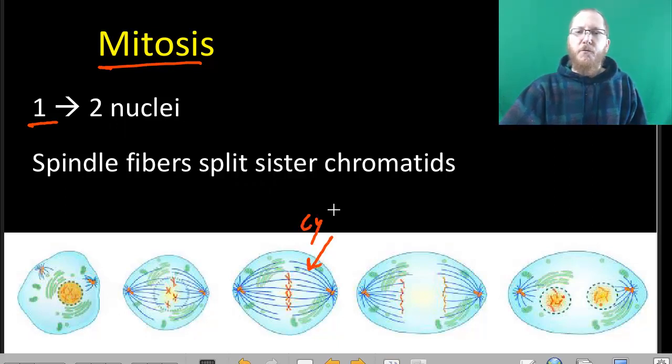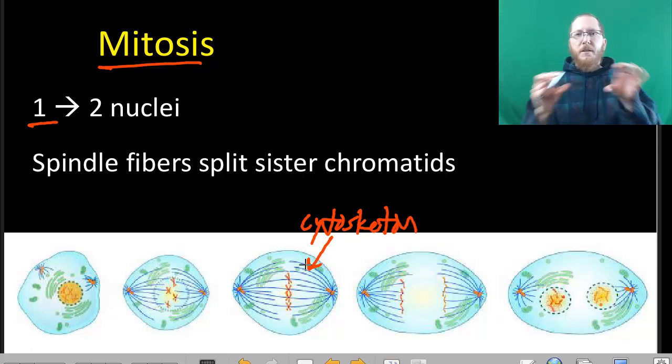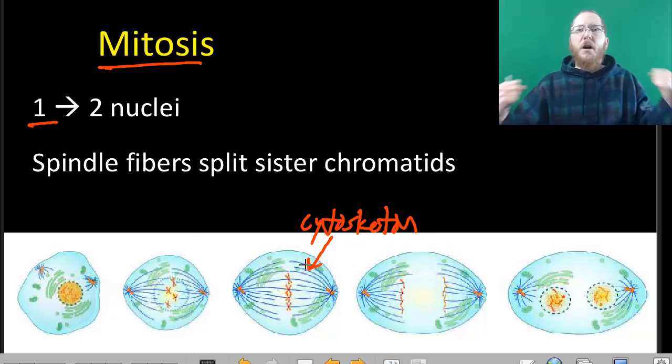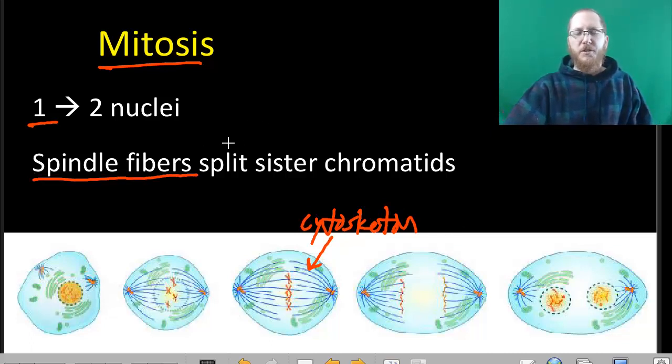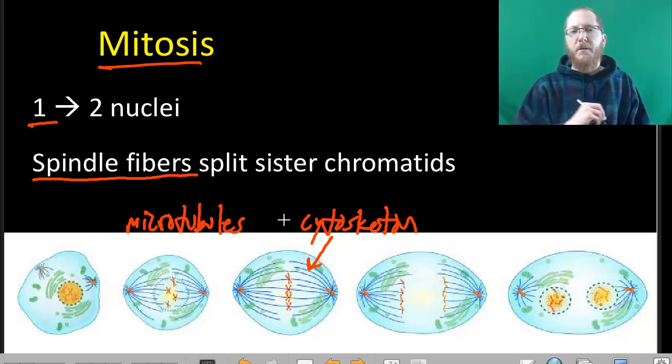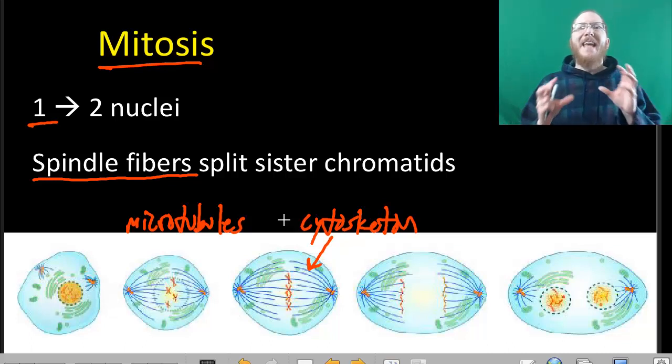These are going to be like the stuff we talked about in the cytoskeleton chapter. These are going to be proteins that are able to span the cell, grab hold of things, and ultimately tug them to one side of the cell. They're specifically called microtubules, but we're normally just going to call them spindle fibers is good enough for me. But if you want to remember back, these are the guys that they called microtubules. They were the biggest part of the cytoskeleton.